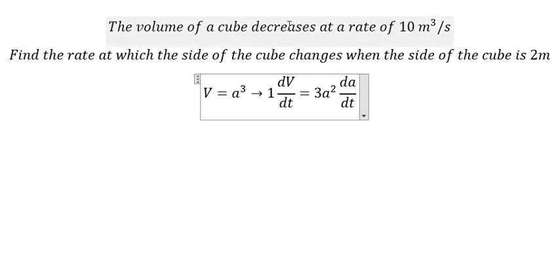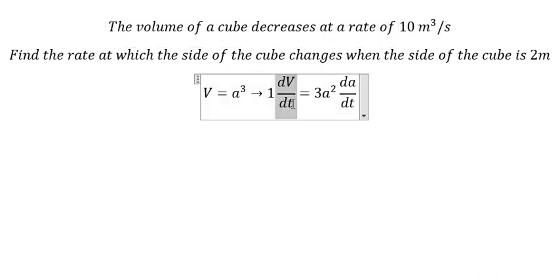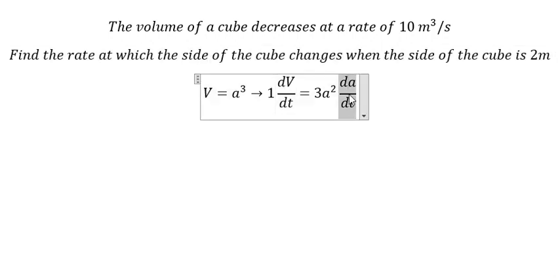From the question, we know that the volume decreases at a certain rate, that is dV/dt. We want to find the rate at which the side changes, that is da/dt. We know that the side is 2 meters.